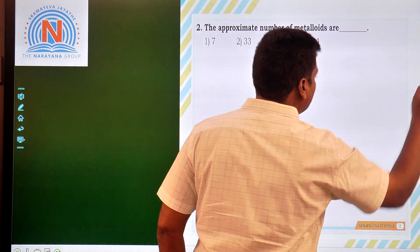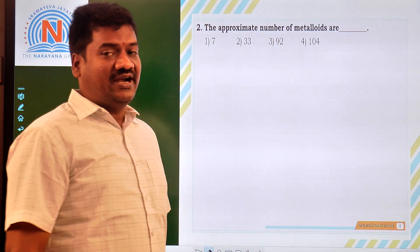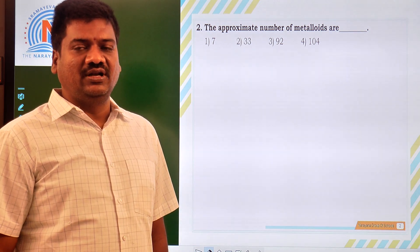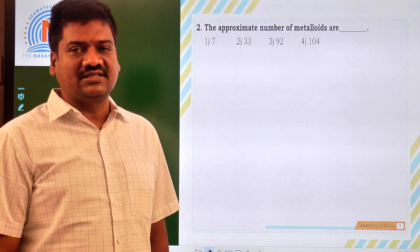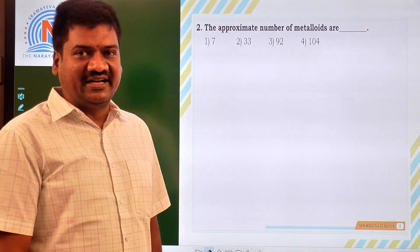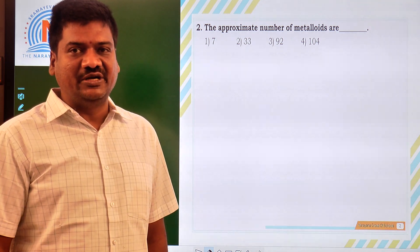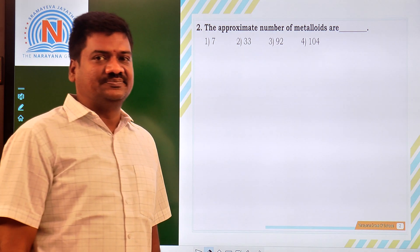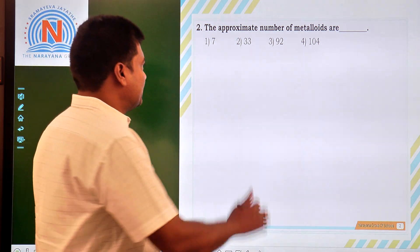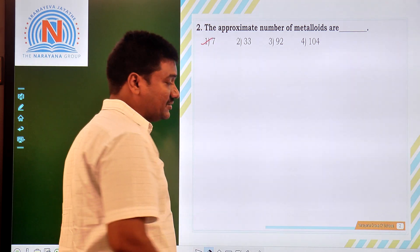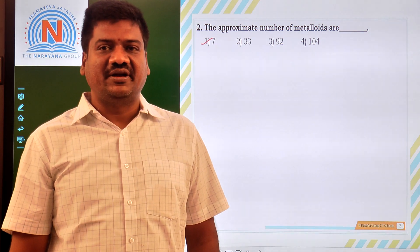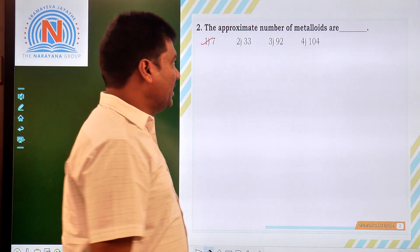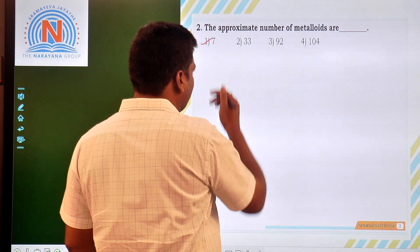Now come to the second question: what is the approximate number of metalloids? In the total periodic table, out of 118 elements, nearly 92 elements are metals, nearly 30 elements are non-metals, and 7 metalloids are there. Metalloids have both the properties of metals and non-metals. The answer is 7.